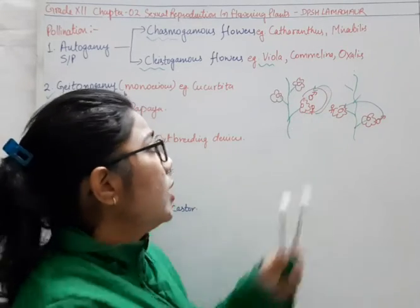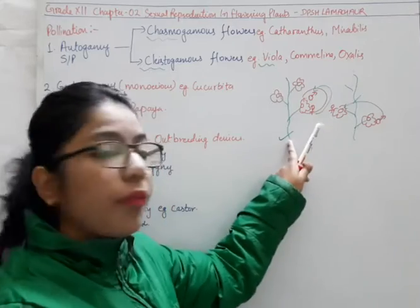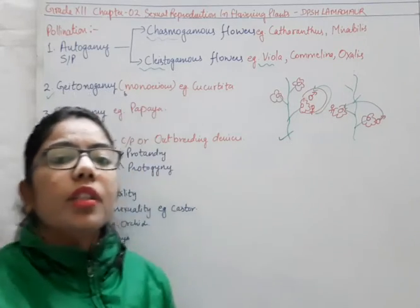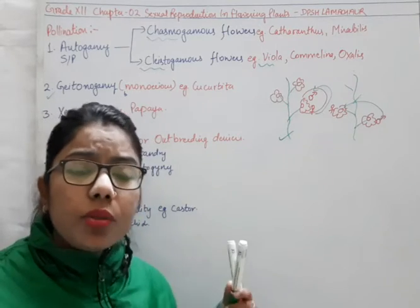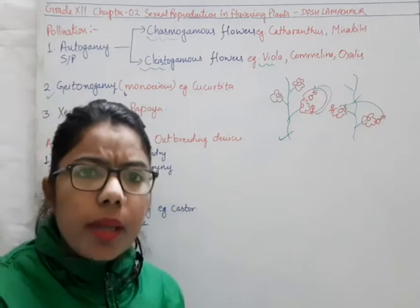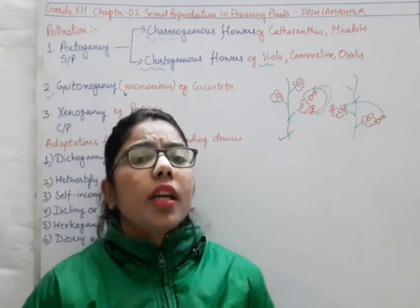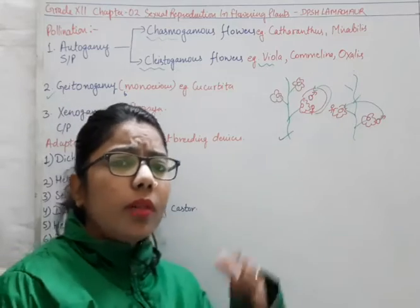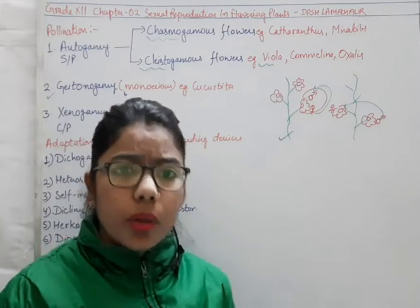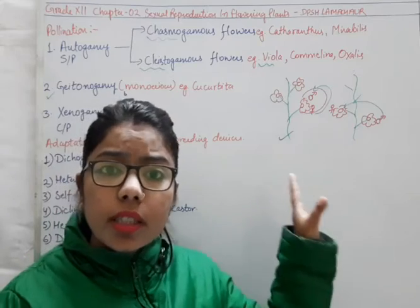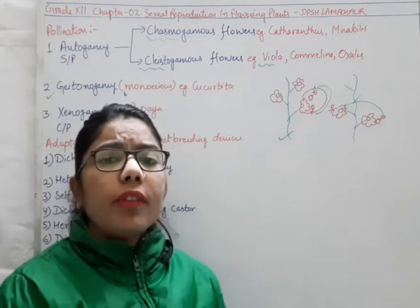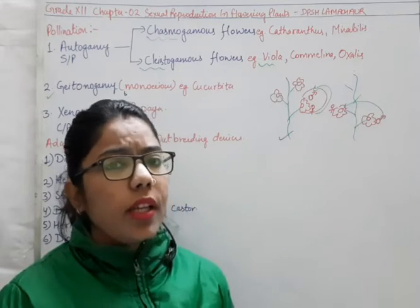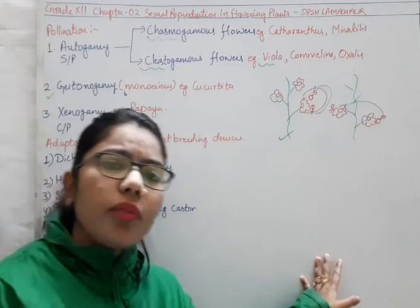Nature will never prefer autogamy. Always, nature tries to ensure cross-pollination. Why? Because in cross-pollination, there are chances of improvement. In terms of evolution also, cross-pollination is preferred because if there will be cross-pollination, there will be more chances of improvement as well as more chances of evolution.